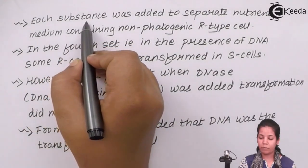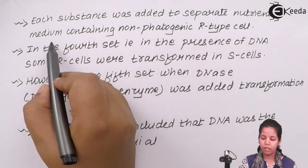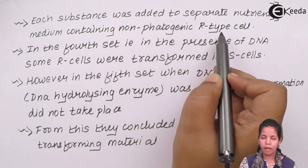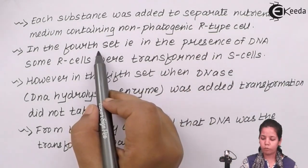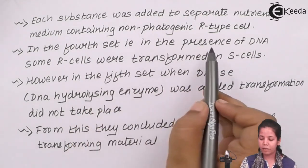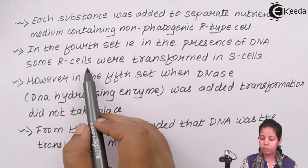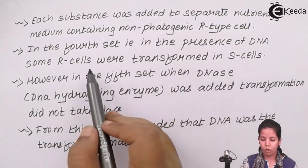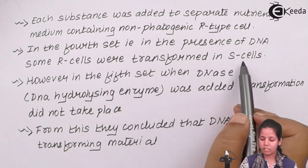Each substance was added to a separate nutrient medium containing the non-pathogenic R-type cells, which we can call the non-virulent strain. In the fourth test tube set, in the presence of DNA, some R cells were transformed into S cells — that is, the non-virulent strain was transformed into the virulent state.